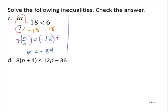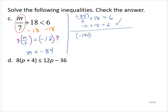Let's run our check. Is negative 84 over 7 plus 18 equal to 6? Negative 84 divided by 7 is negative 12, and negative 12 plus 18 is equal to 6 — so that checks out. Now let's try a number less than negative 84. How about negative 140? Is negative 140 over 7 plus 18 less than 6? Negative 140 over 7 is negative 20, and negative 20 plus 18 is negative 2, which is less than 6. That checks out, so I can be confident in my solution.